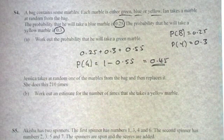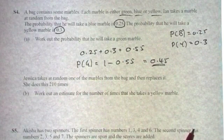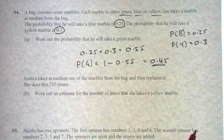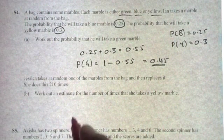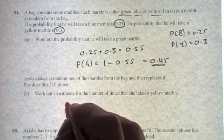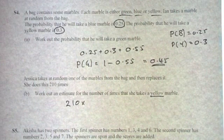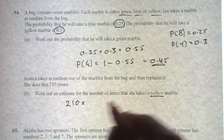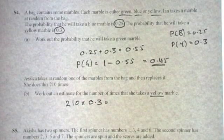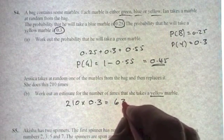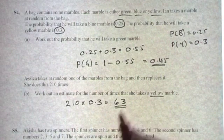The second part of this question says Jessica takes at random one of the marbles from the bag and replaces it. She does this 210 times. Work out an estimate of the number of times she takes a yellow marble. So she does it 210 times, and you're looking for the yellow marble. The probability of a yellow marble was 0.3, so it's going to be 210 times 0.3, and that comes to 63. So she should take a yellow marble about 63 times.